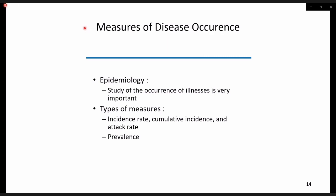In epidemiology, the study of occurrence of illnesses is of prime importance. There are other types of measures that give more information relevant to the importance of epidemiology. These are incidence rate, cumulative incidence, attack rate, and prevalence. But we need to look at risk first.